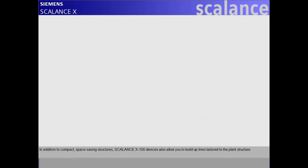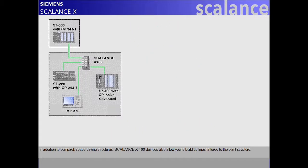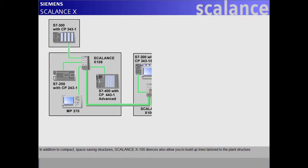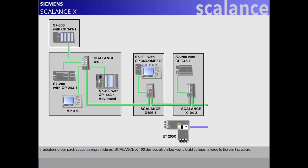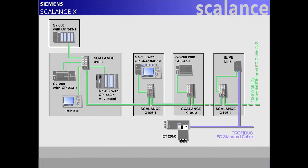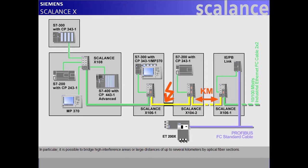In addition to compact space-saving structures, Scalance X100 devices also allow you to build up lines tailored to the plant structure. In particular, it is possible to bridge high-interference areas or large distances of up to several kilometers by optical fiber sections.